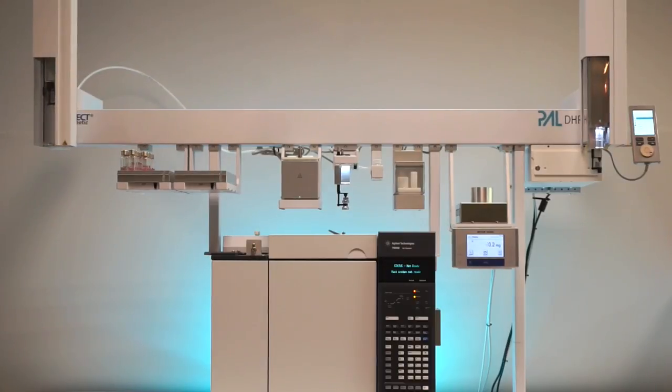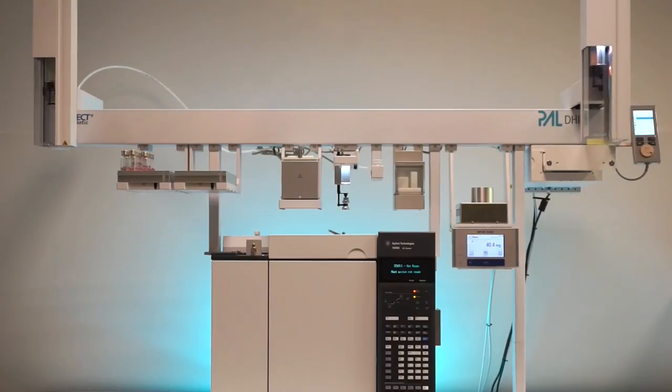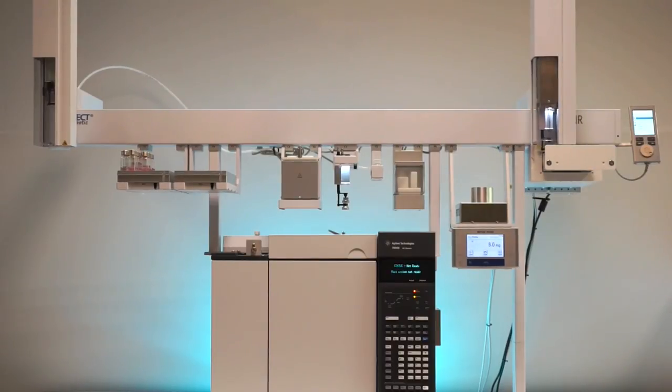The right arm of the autosampler, with an automatically exchangeable tool for liquid injection, attacks the 2ml vial with the internal standard from the cooled rack and transports it to the vortexer where it is homogenized at 2000 rpm.